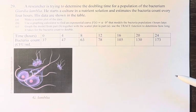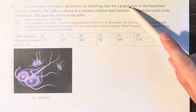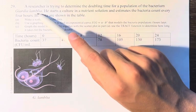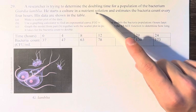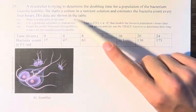Hello and welcome back to another video. In this problem, a researcher is trying to determine the doubling time for a population of the bacterium Giardia lamblia. He starts a culture in a nutrient solution and estimates the bacteria count every four hours. His data are shown in the table.